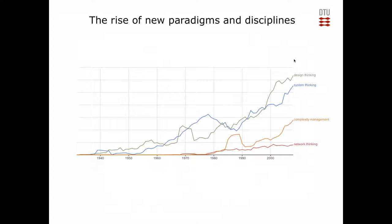We are at a point where new disciplines are emerging rapidly. Looking at the growth of fields related with systems, system thinking, complexity, and design thinking — design thinking is largely about system thinking, which you can see by the obvious correlation. Complexity management came a bit later because it required analytical tools and computational power. Network thinking is perhaps the actual implementation of system thinking.